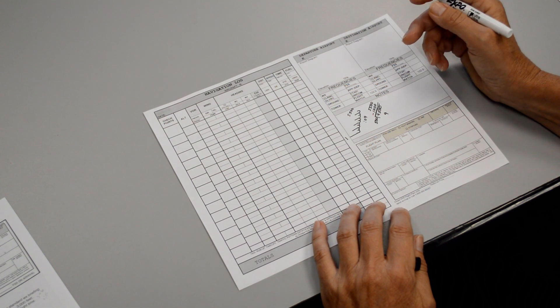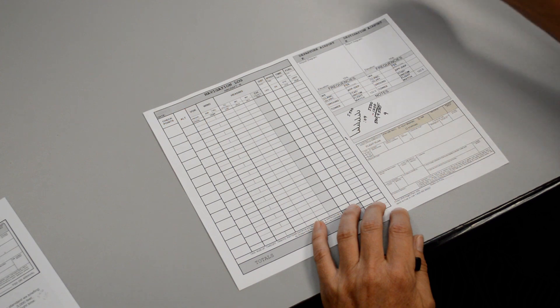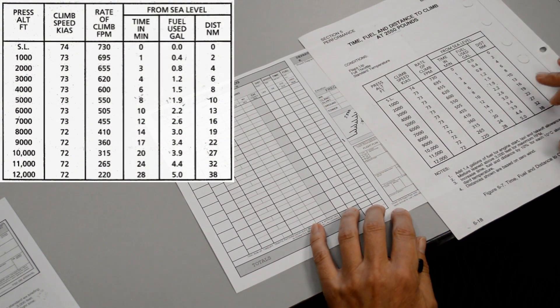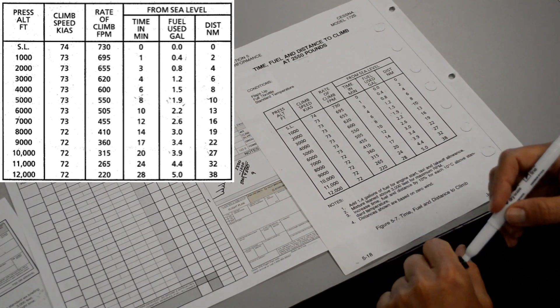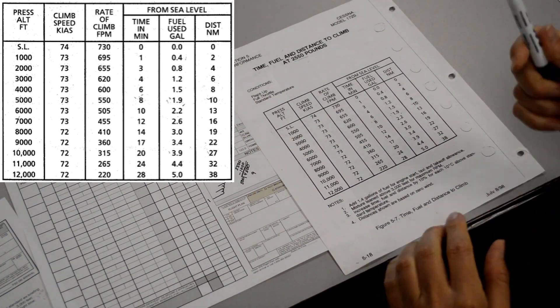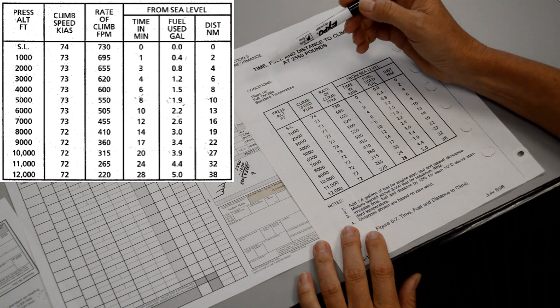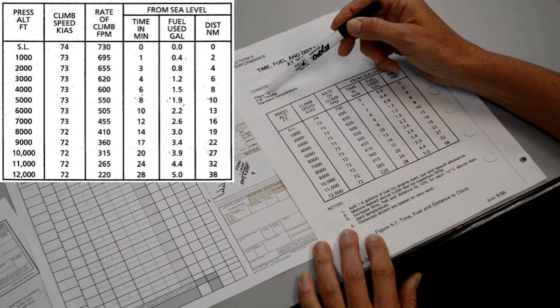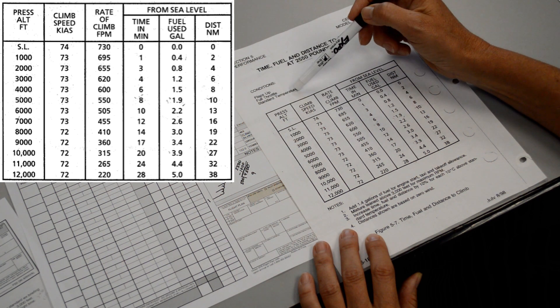Now we also have a time, fuel, and distance to climb chart out of the POH that we can take a look at. The chart tells us that the conditions would be flaps up, full throttle, standard temperature.